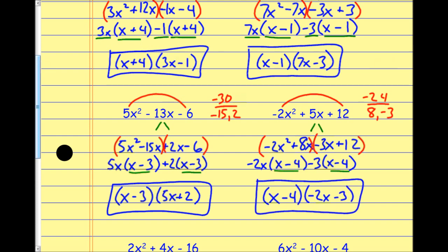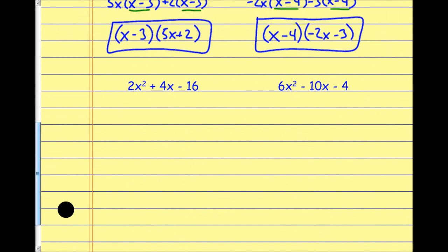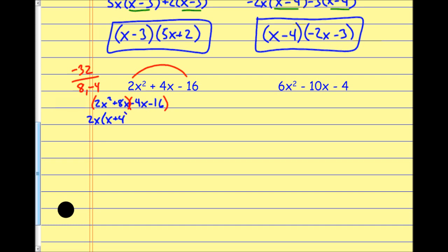A couple more — these are a bit tricky. I build a bridge: that's negative 32. Two numbers that multiply to negative 32 but add to 4 are positive 8 and negative 4. Splitting up the middle term gives 2x² plus 8x minus 4x minus 16. Factoring by grouping: from the first group, factor out 2x leaving x plus 4; from the second group, factor out negative 4 leaving x plus 4. This gives factors x plus 4 and 2x minus 4 — but that is incorrect, because 2x minus 4 still has a greatest common factor.